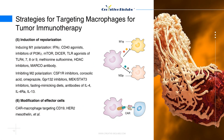5. Induction of repolarization: M1 polarization of tumor-associated macrophages is associated with anti-tumor responses, while M2 polarization is associated with protumor activities. Several factors can induce M1 polarization, including IFN-gamma, CD40 agonists, inhibitors of PI3K-gamma, mTOR, DICER, agonists of TLR-4/7/8/9, methionine sulfoximine, histone deacetylase inhibitors, and antibodies against macrophage receptors with collagenous structures. In contrast, factors inhibiting M2 polarization — such as CSF1R inhibitors, corosolic acid, omeprazole, GPR-132 inhibitors, MEK and STAT-3 inhibitors, fasting-mimicking diets, and antibodies against IL-4, IL-4 receptor alpha, and IL-13 — can also reduce the tumor burden.